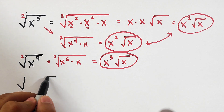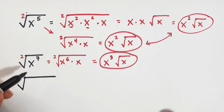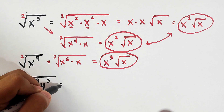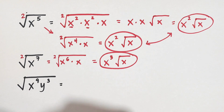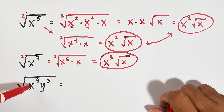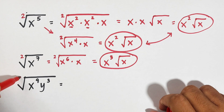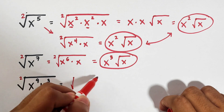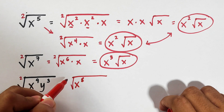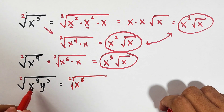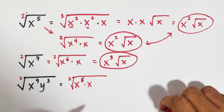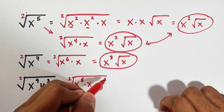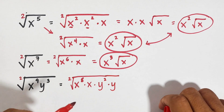Let me give you another example — number three. I will use two variables: x raised to the ninth power and y raised to the third power. Is it possible to extract the square root? Yes. What are the factors of x to the ninth that are divisible by two? You can break it down as x raised to the eighth power — because 8 is divisible by 2 — and then the remaining x. For y raised to the third power, you can break this down as y squared times y.